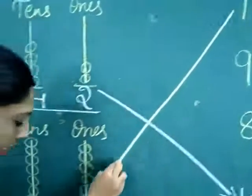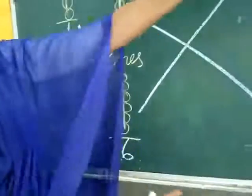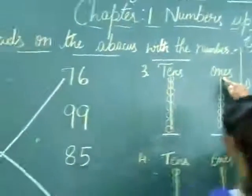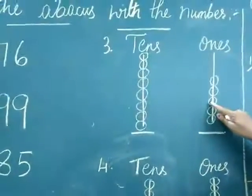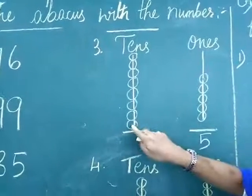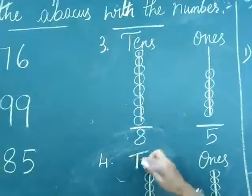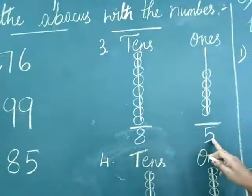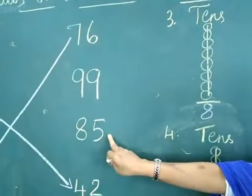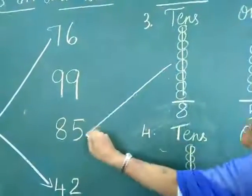You are counting the beads on the abacus, writing the numbers, and matching. Third one: count how many ones there are — one, two, three, four, five — five ones. And in the tens place: one, two, three, four, five, six, seven, eight — eight tens. Eight tens and five ones is equal to eighty-five. It is just below ninety-nine and above forty-two. Match eighty-five.